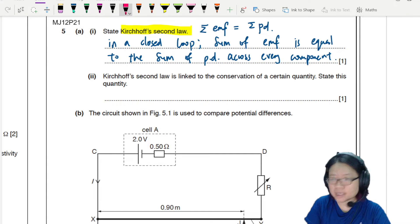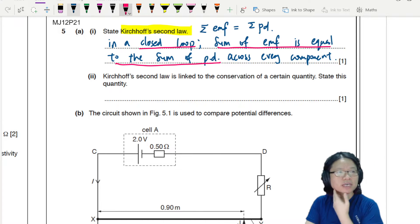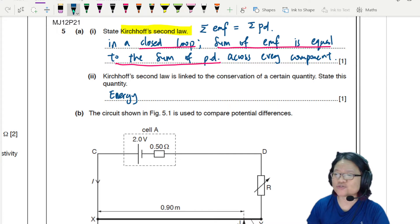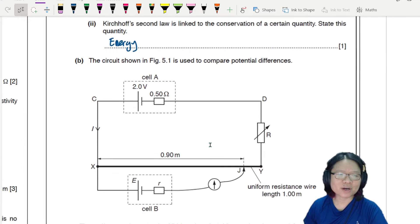So the keywords that we are looking for is number one, closed loop. Number two, sum of EMF is equal to the sum of PD. And Kirchhoff's second law is related to the conservation of a certain quantity. As mentioned just now, this is the conservation of energy. All right, now we can move on.